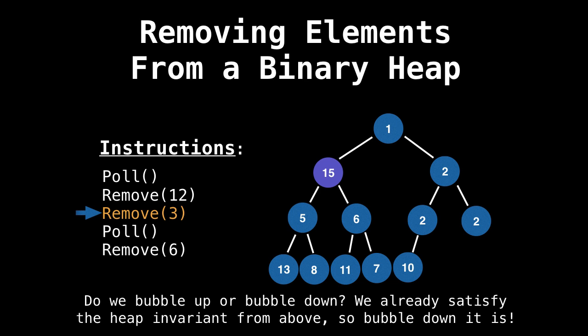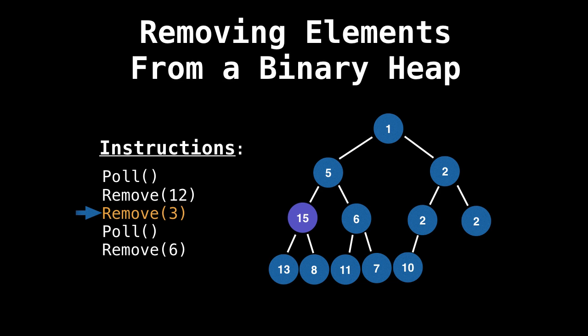But now the question is, do we bubble up or bubble down the value? Because you don't really know what the value of the node in the last position is when you're swapping it in. So do we bubble up or bubble down? Well, we already satisfy the heap invariant from above. So we need to bubble down 15. So five was smaller, so we swapped it with five. Now eight is smaller, so we swap it with eight. And again, the heap invariant is satisfied.